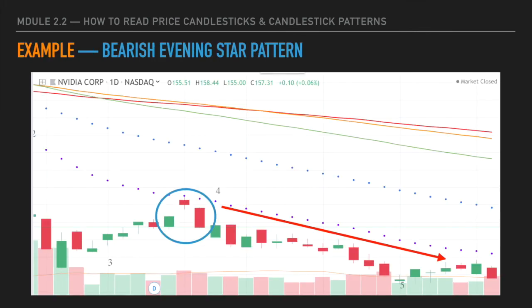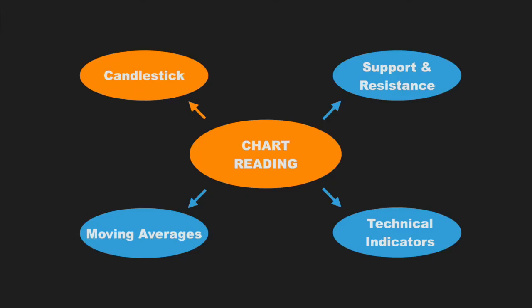You will most likely see bearish evening star patterns at a strong resistance level. Here's an example — the market was going up and hit the 20-day moving average, then formed a bearish evening star pattern right there. After that, the market bounced back from the resistance and continued going lower. So if you want to go short on this stock, or you're already in a short position and want to add more, this pattern can help you identify the ideal entry point.